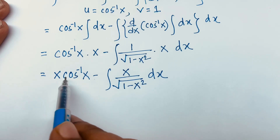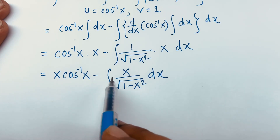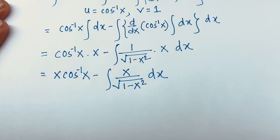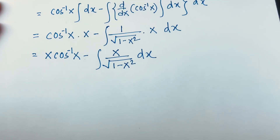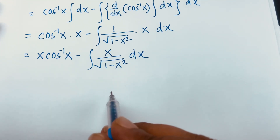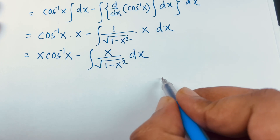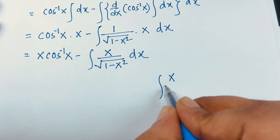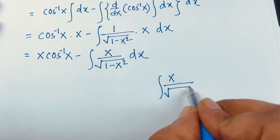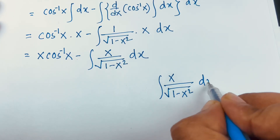So we find out this side will be x cosine inverse x. But the integral of x over square root (1 minus x squared) dx is equal to what? So in this case, we write down the integral of x over square root (1 minus x squared) dx.